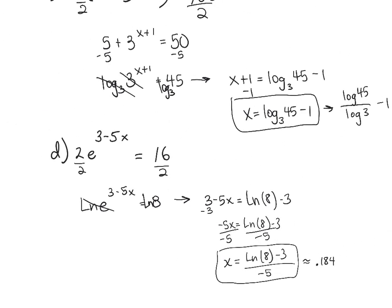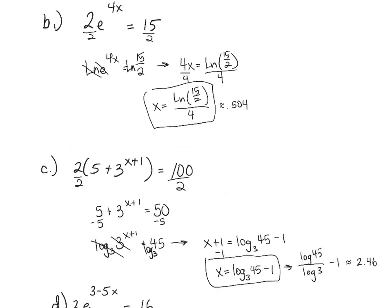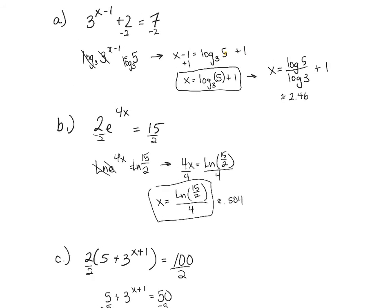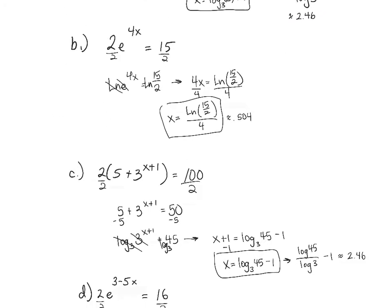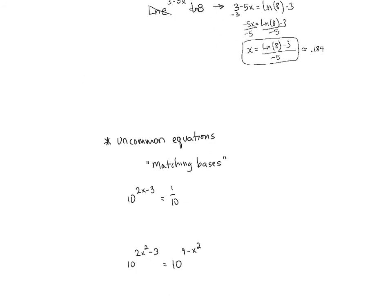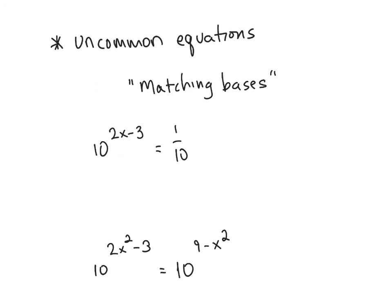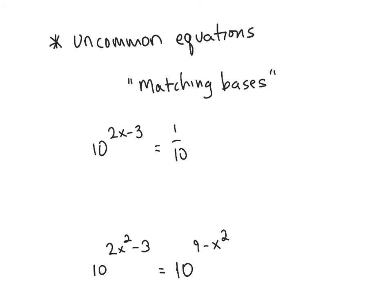Those four examples are very common types of exponential equations to solve. They use all three steps: isolating the exponential term, using a logarithm on both sides, and then solving for the variable. There are also some less common types of exponential equations.